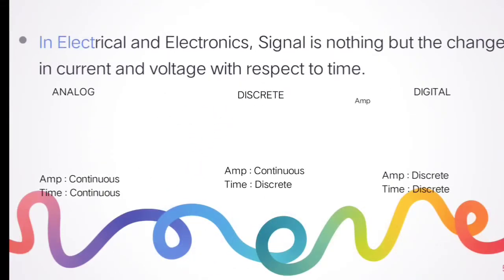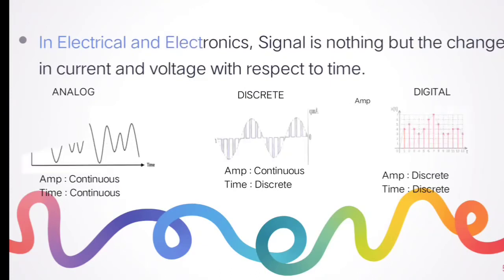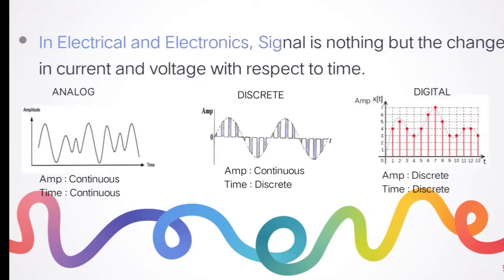In terms of digital electronics, a signal is nothing but the change in current and voltage with respect to time. This diagram shows the representation of an analog signal, a digital signal, and a discrete signal.